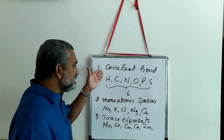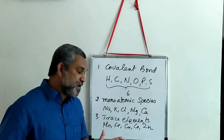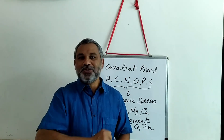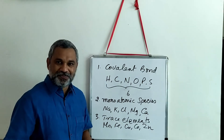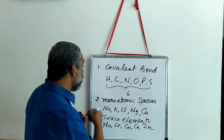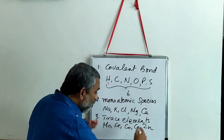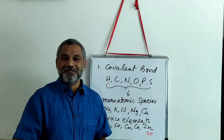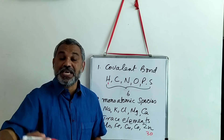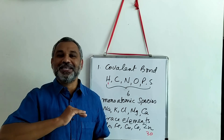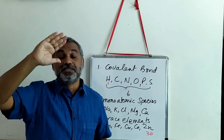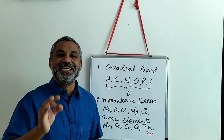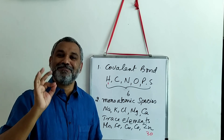If you look at these three categories — the covalent bond-forming elements, the monoatomic species, and the trace elements — they form the major portion supporting life. Let us look at the atomic numbers of these elements. The lowest atomic number is hydrogen, that is 1, and the highest atomic number among all these elements is zinc, that is 30. In the periodic table, they are in the lower positions. We are not made of gold, silver, platinum, or such high molecular weight elements — we are made of low molecular weight elements, all within the first 30 elements of the periodic table.